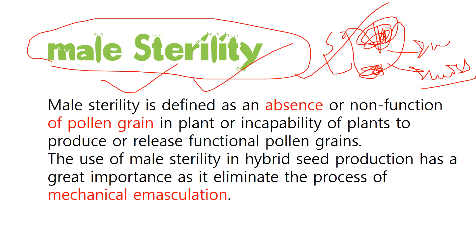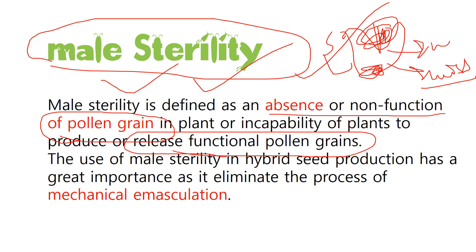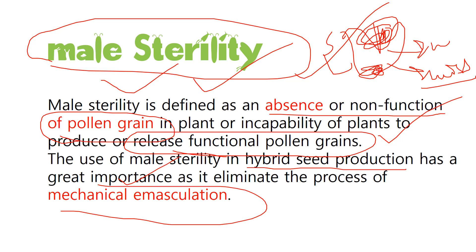Male sterility is defined, as the name implies, as the absence or non-function of pollen grains — the pollen grains become useless, or the plant is incapable of producing functional pollen grains. It is used in hybrid seed production, where it has great importance because it eliminates the process of mechanical emasculation.